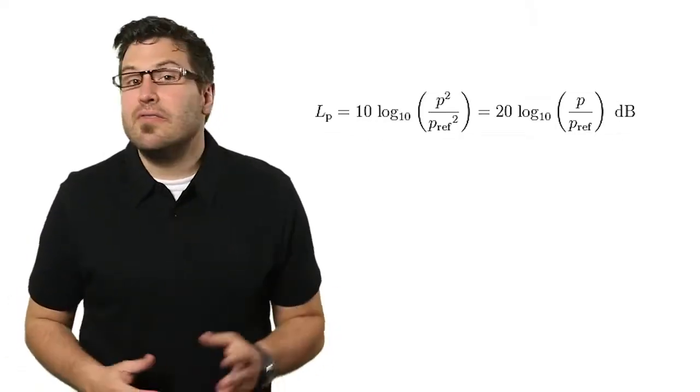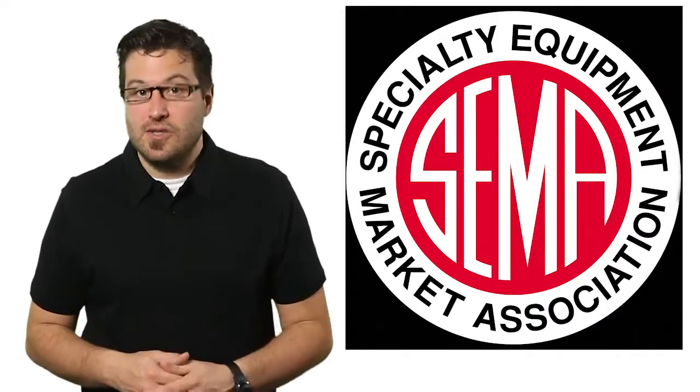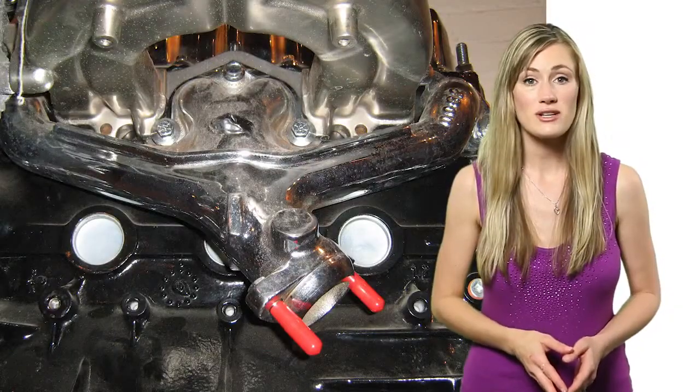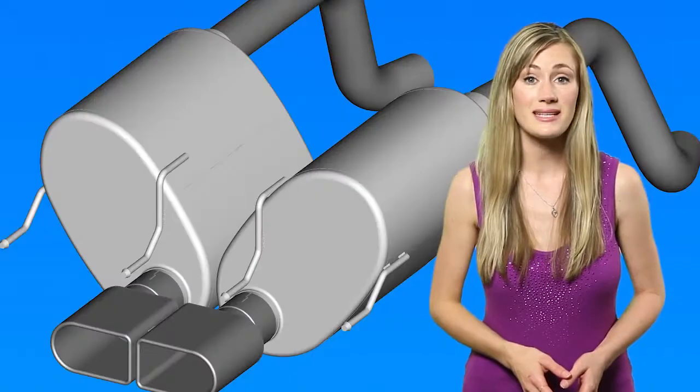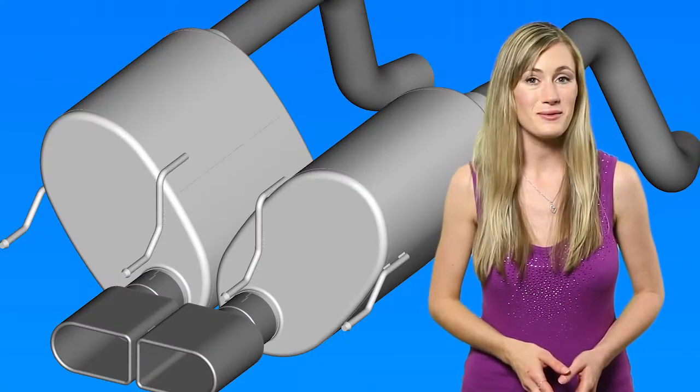Engineers at Callaway first examine the baseline volume parameters of each car by securing parasolid models from SEMA, the Specialty Equipment Marketing Association. The Callaway engineers then use Creo Parametric to import the parasolids and begin modifying the system to deliver greater performance and the right sound.